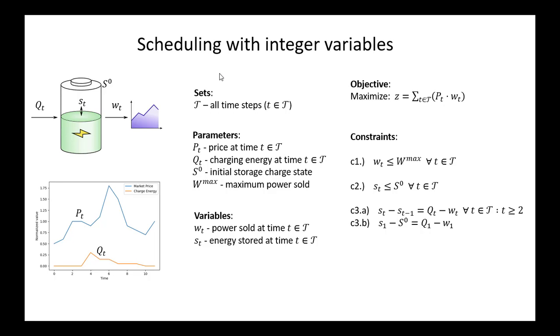We have a set of time steps that we're iterating over. There are parameters that may change with time. You have these time indexed parameters, but the parameters are known completely at the beginning of the problem. The only thing that's being varied by the solver is the variables noted here, which are the power sold at time t, which is a continuous value between zero and some maximum Wmax, and the state of energy storage St.